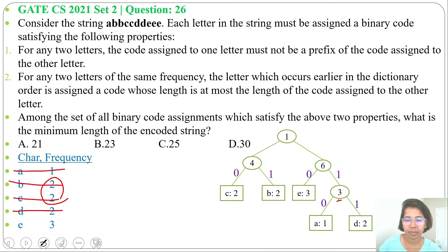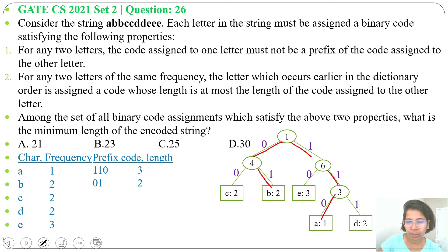Now write the prefix code and code length for every character. Prefix code of 'a' will be 110, and code length will be 3. Prefix code of 'b' will be 01, code length will be 2. Prefix code of 'c' will be 00, code length will be 2. Prefix code of 'd' will be 111, code length will be 3. Prefix code of 'e' will be 10, code length will be 2.